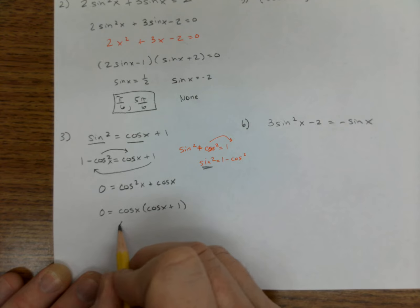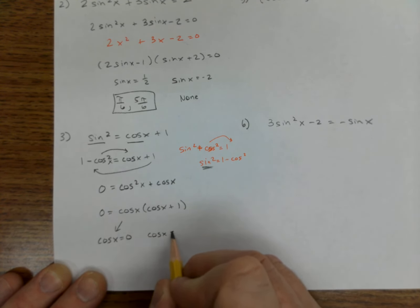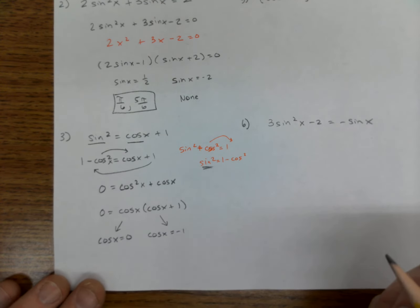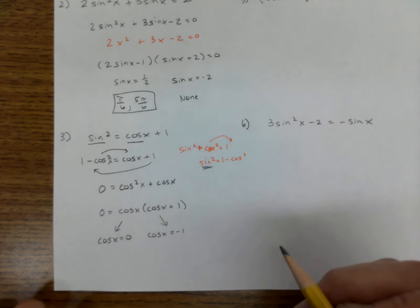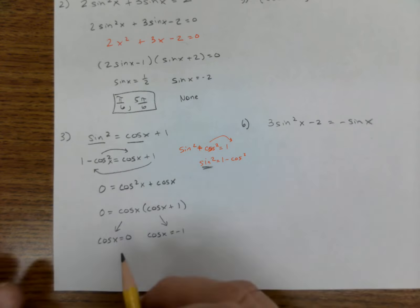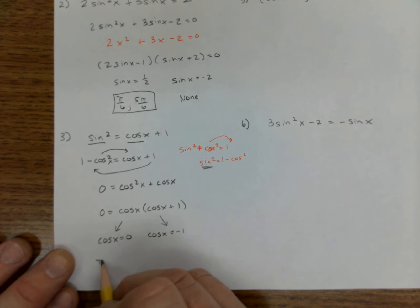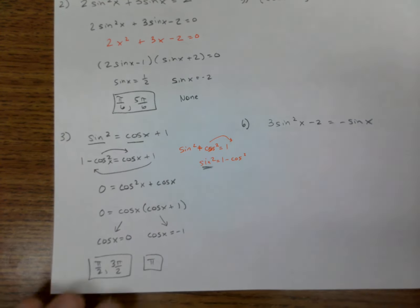And now I have two options here. Cosine x could be zero, or cosine x could be negative one. And what are those solutions? Well, where is cosine equal to zero? Well, that's π over 2 and 3π over 2. And where's cosine negative one? Well, that's that π, so you have those three solutions down there.